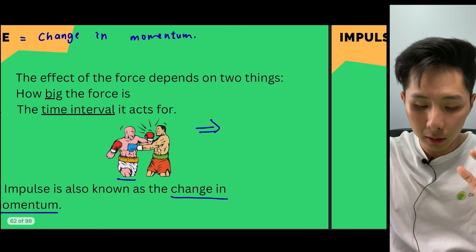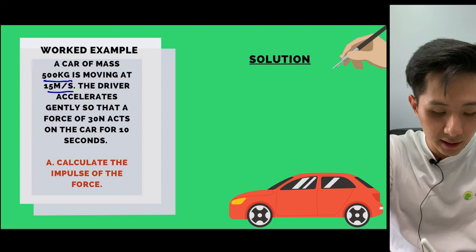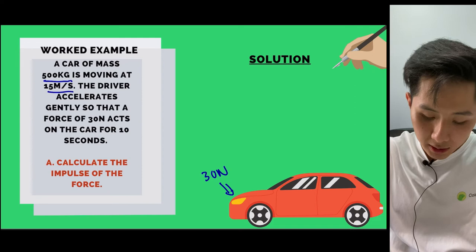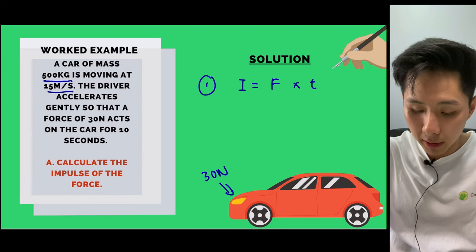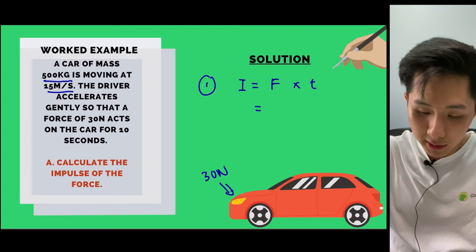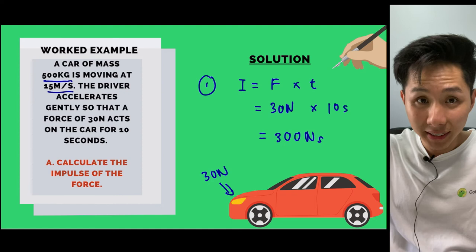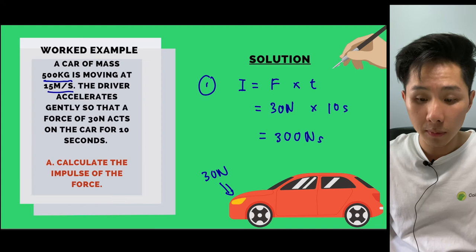Worked example: a car of mass 500 kg moving at 50 m/s. A force of 30 Newton acts on the car for 10 seconds. Calculate the impulse: Impulse = F × t = 30 × 10 = 300 Newton second. This also means the car's momentum changes by 300 kg m/s.